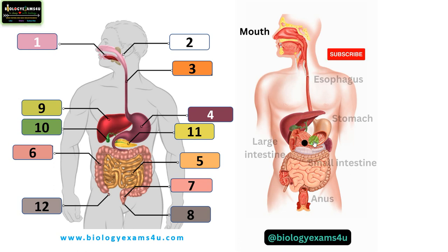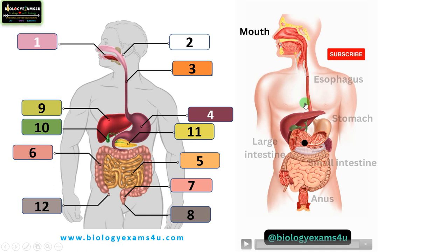The digestive system works by a series of mechanical and chemical processes. The mechanical process involves chewing, mixing and moving of food through the alimentary canal. The chemical processes involve secretion of enzymes for digesting complex molecules into smaller molecules. The nutrients are absorbed into the bloodstream through the walls of the small intestine, and the absorbed nutrients are then transported to different cells throughout the body where they are used for energy, growth and repair.